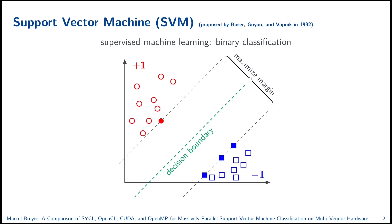If we want to classify a new data point using this classifier, we simply calculate on which side of the decision boundary our new data point lies. We calculate a scalar product of the new data point and the normal vector w to the decision boundary, together with the addition of the bias, which indicates the distance to the origin. Since we are only interested in which side our point falls, it is enough to get the sign of our result. So in our example, data point x would belong to the class blue squares.